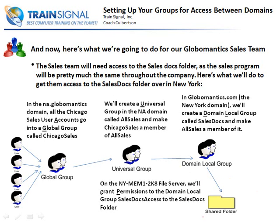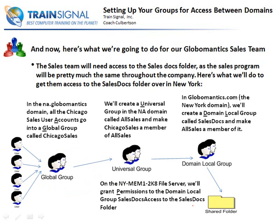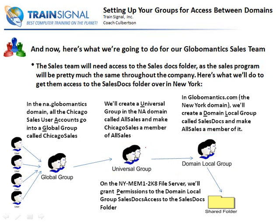If you have a single-domain structure, you don't need AGUDLP — you only need one global group and you can give access directly to the shared folder, like we did with New York. But once multiple domains come into play, the complexity increases. In order to grant access in a more manageable and secure way, we need to bring in the universal group, domain local group, and the whole AGUDLP strategy to more efficiently provide access to shared resources across our entire forest.